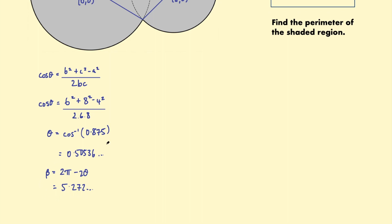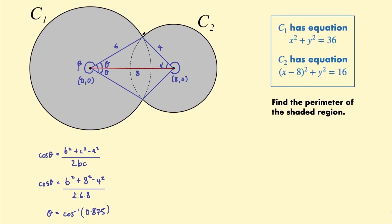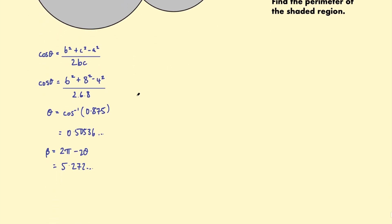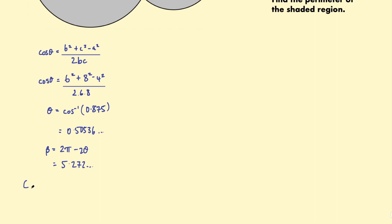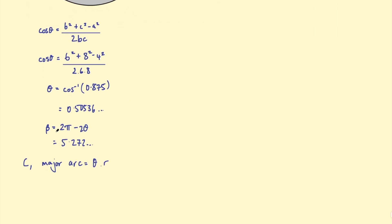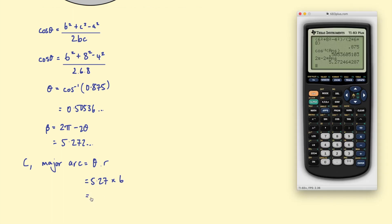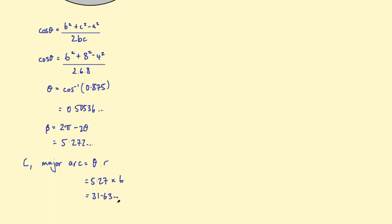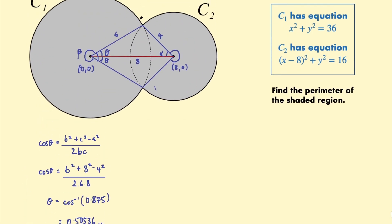Okay and then I can go ahead and find the arc length here. This major arc. So in radians when you're working in radians the arc length, so the major arc of circle one, when you're using radians it's the angle times the radius. Okay so we have the angle beta. This is going to be 5.27 approximately multiplied by the radius which is 6. Okay so then let's plug that in. So take that previous answer multiplied by 6 and I get 31.63 and so on. Okay so we have this length around the major arc of the first larger circle.